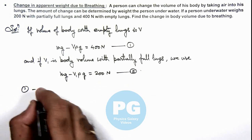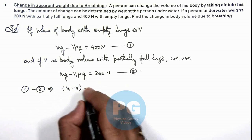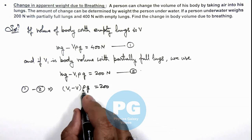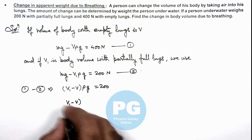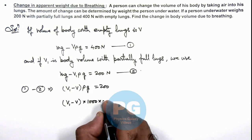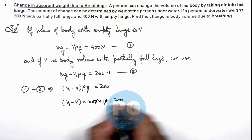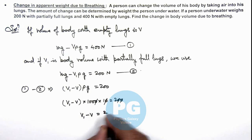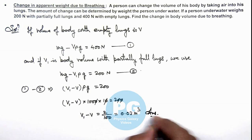Here, if we subtract equation 1 minus equation 2, the result is: V1 minus V, multiplied by ρ·g, is equal to 200. We know the density of water as well as g, so substituting — water density is 1000 and g is 10 — this equals 200. Solving this equation, we get V1 minus V is equal to 2 divided by 100, that is equal to 0.02 meter cube. That is the result: the change in body volume due to breathing in lungs.